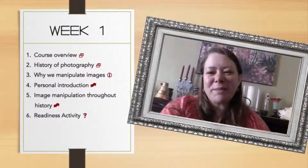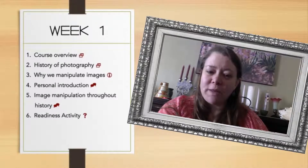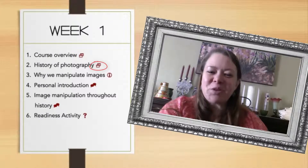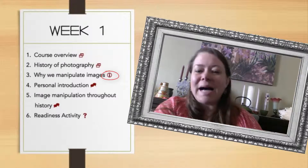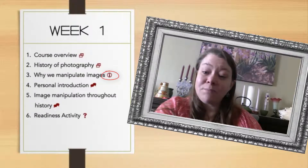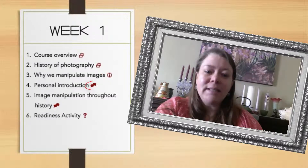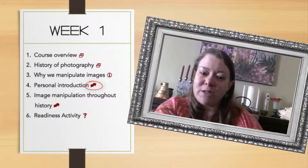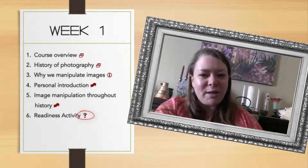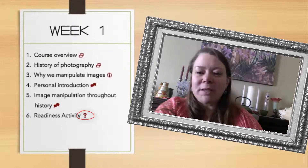Here's what you can expect in week one. You're taking care of this week's overview — those two little icons to the right mean it's a video. There's a history of photography activity, also videos. 'Why manipulate images?' has an eye icon, meaning it's an informational reading. You'll participate in your personal introduction — those discussion bubbles mean it's a discussion topic. Image manipulation throughout history is another discussion topic. And then you're taking care of the readiness activity — that question mark means it's a quiz.